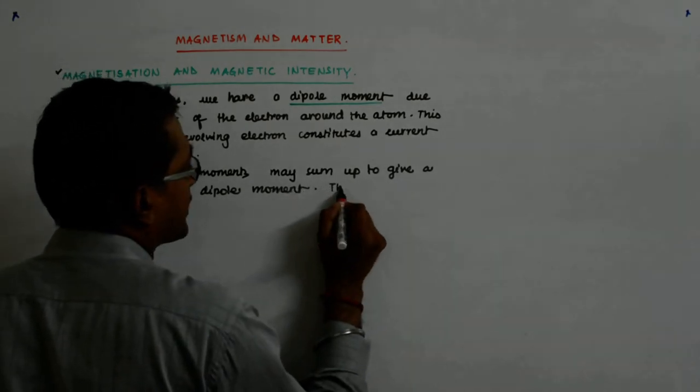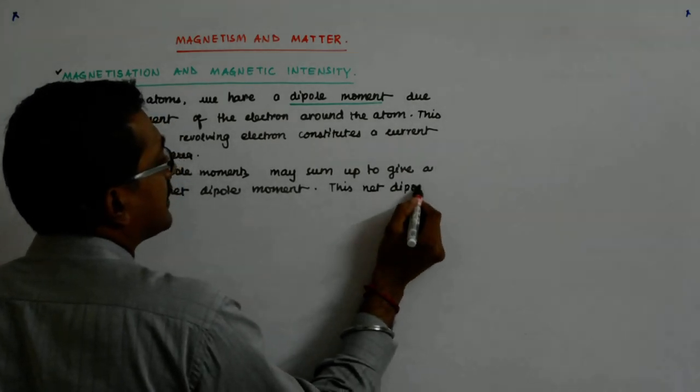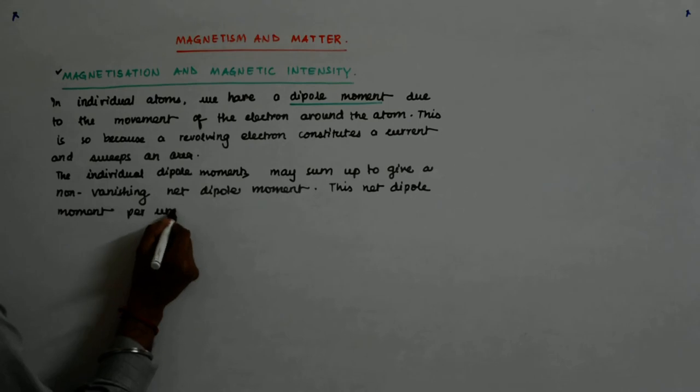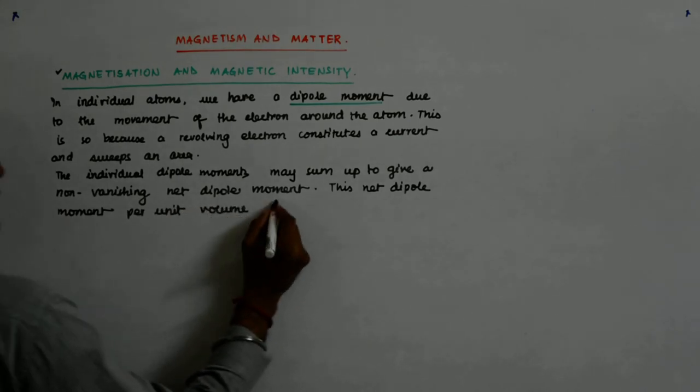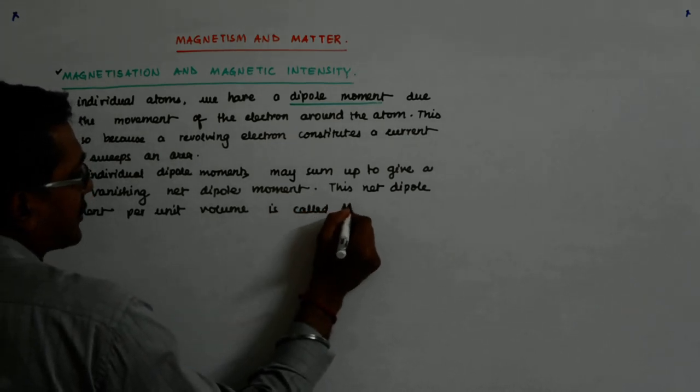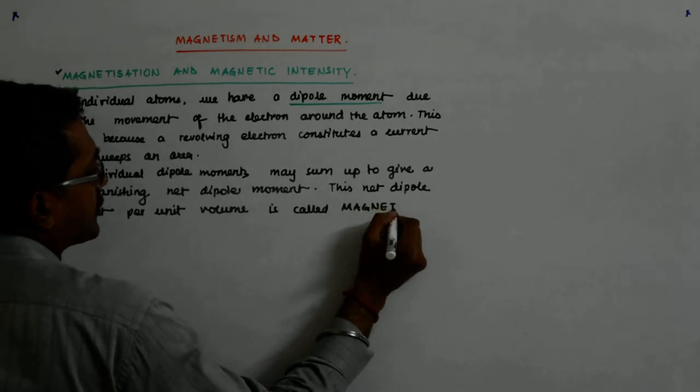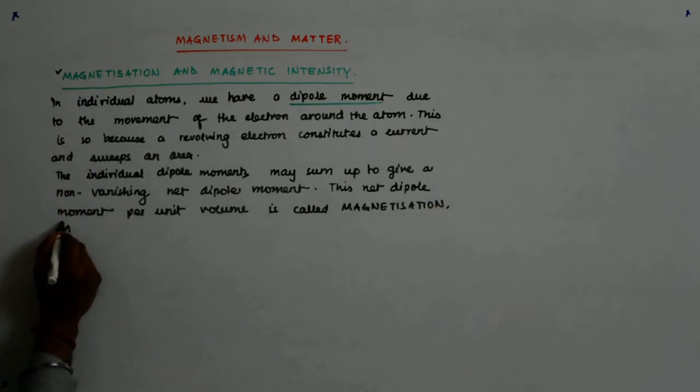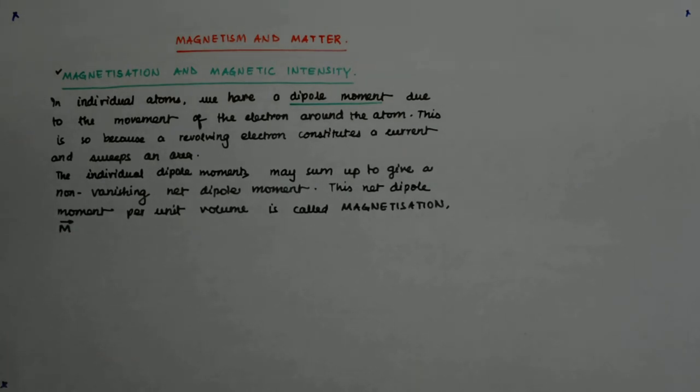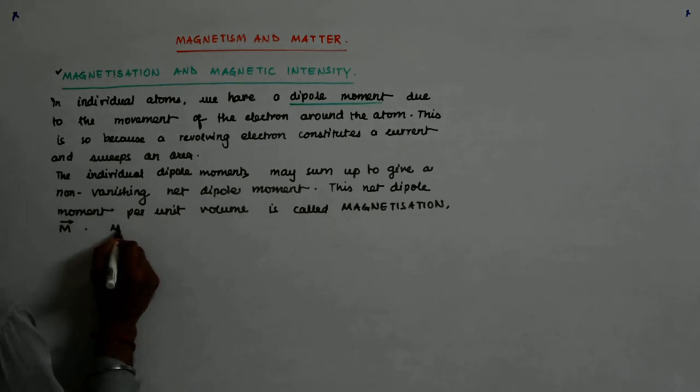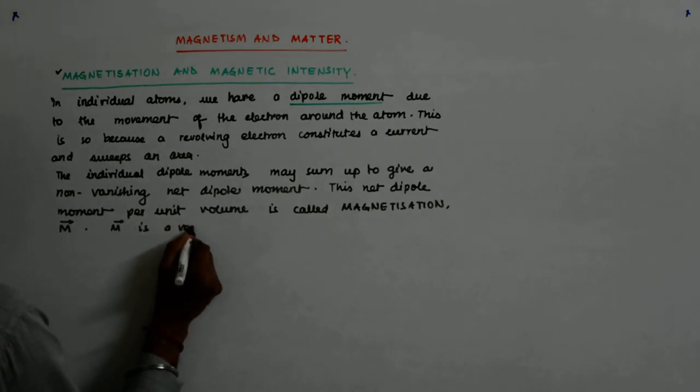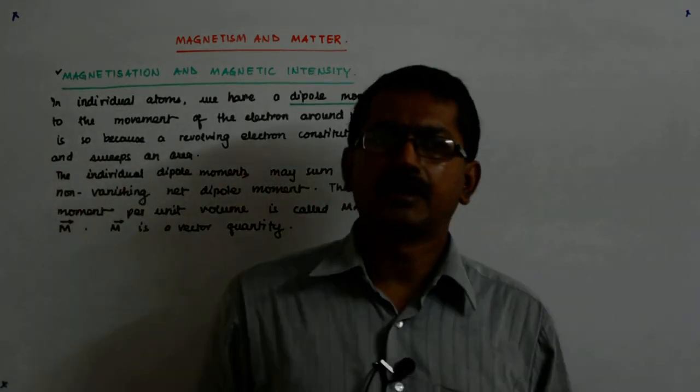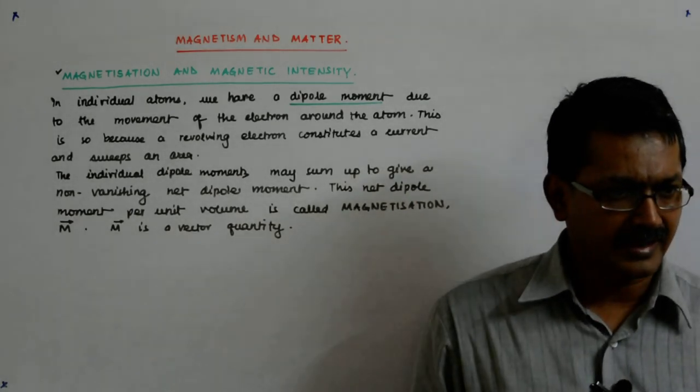Now, this net dipole moment per unit volume is what is called magnetization, and it is denoted by capital M. M is a vector quantity. Why? Because it is the sum of dipole moments and each dipole moment itself is a vector quantity.